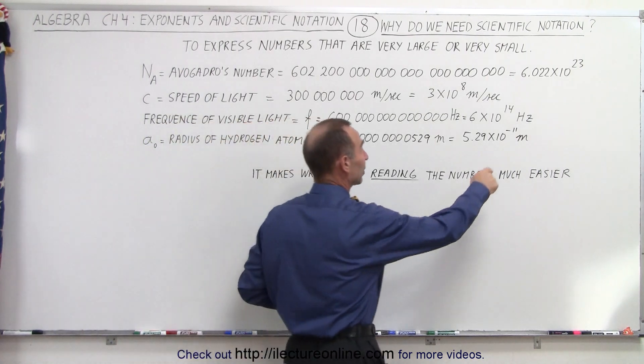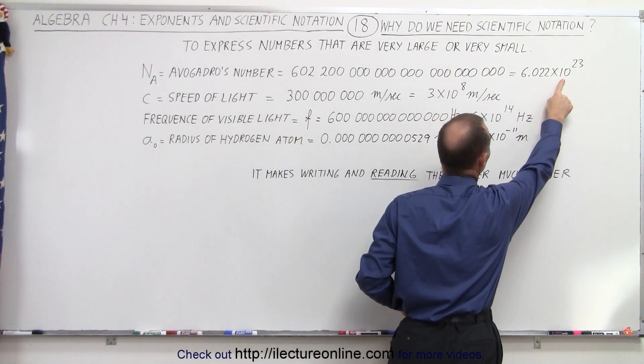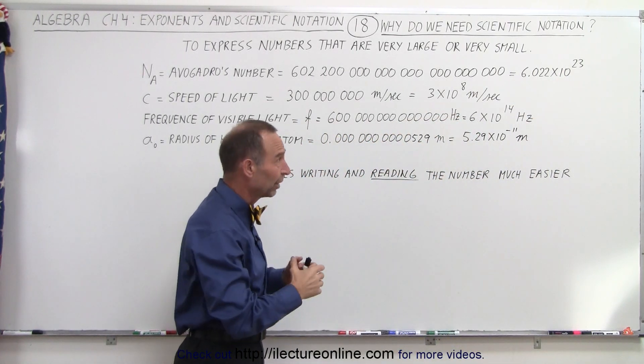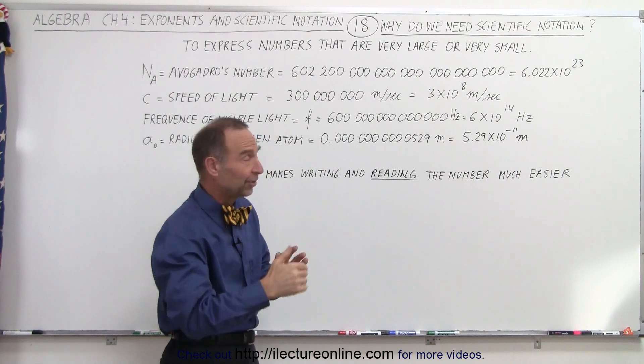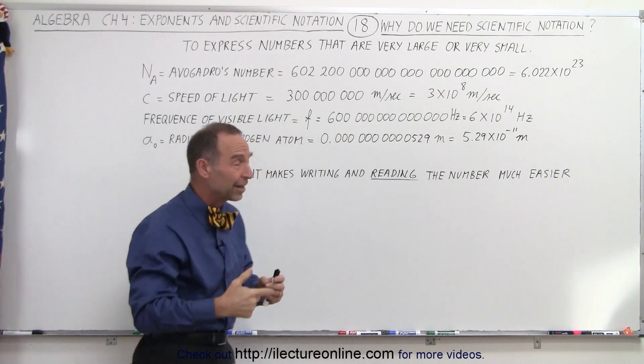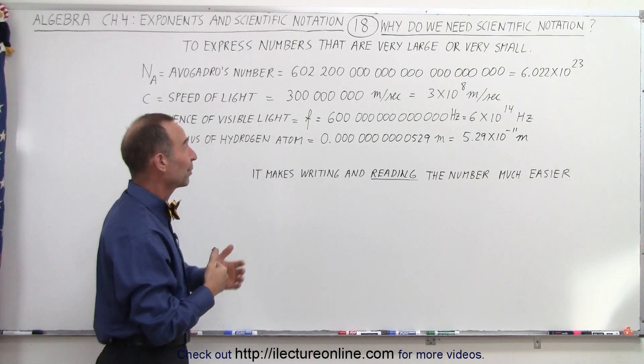It is a lot easier to take a look at this, and then notice at the end we have 10 to the 23rd power, which means a 1 with 23 zeros. At least in a very compact way, we know how many zeros there are. When you write it like this, you'd have to try to count and figure out how many zeros we have there.